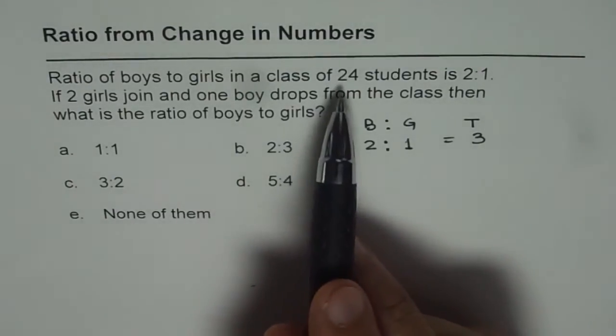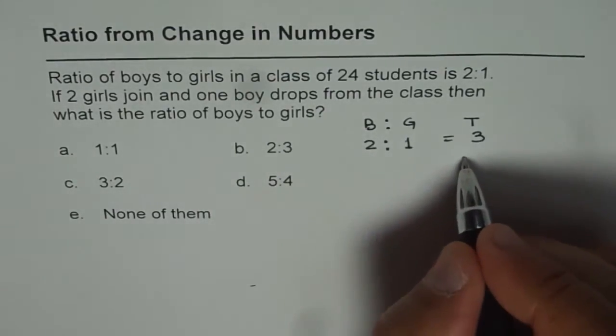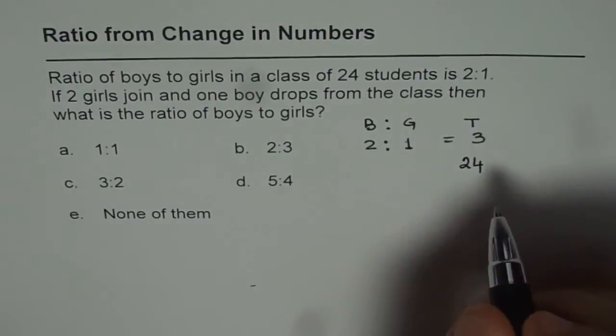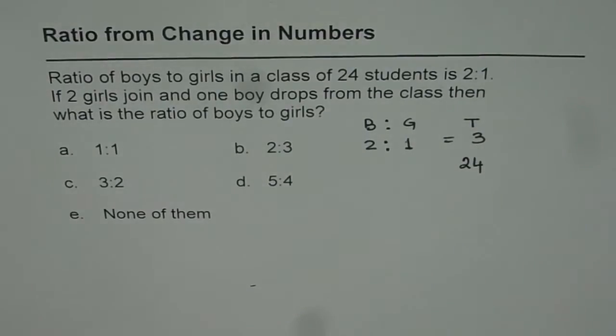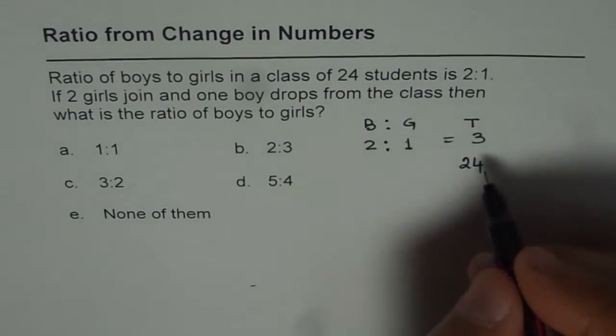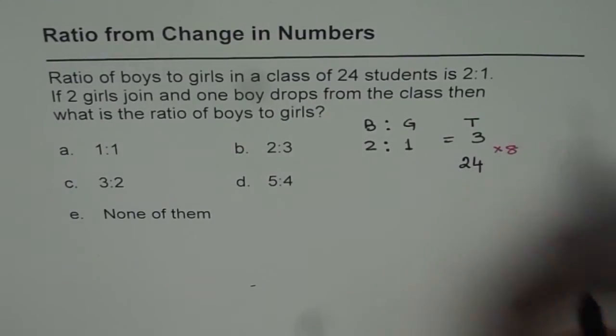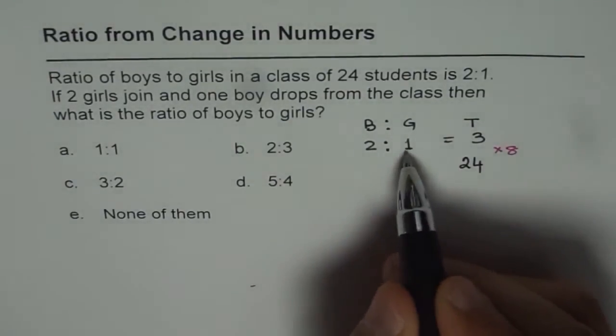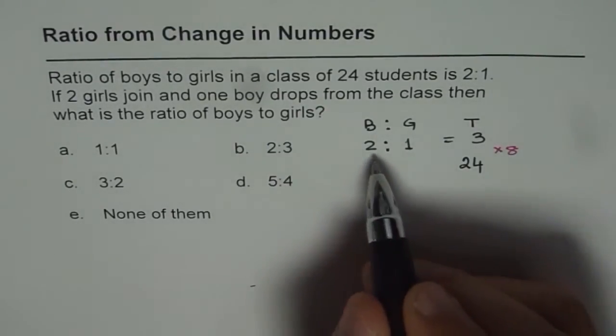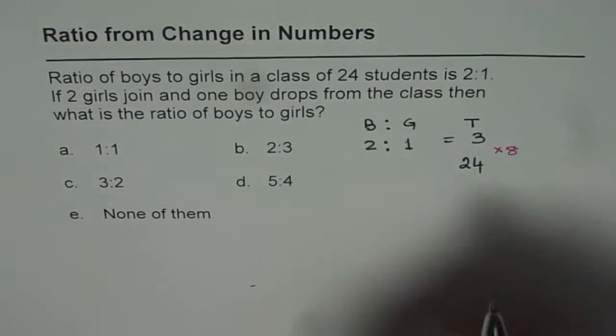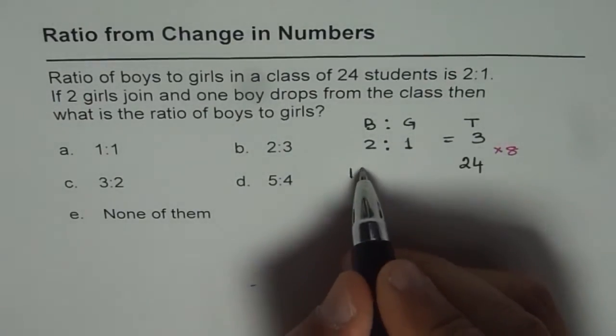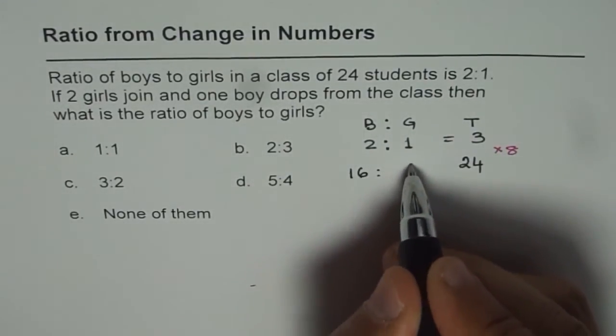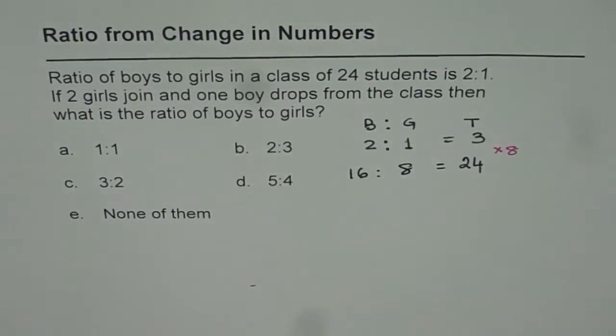Now in this class we have 24 students, right? So we will write 24 here. Now how is 24 related with 3? 24 is times 8. So it is times 8. So number of boys and girls, we will multiply both by 8 to know exactly how many boys are there and how many girls are there. 8 times 2 is 16 and 8 times 1 is 8. So that gives us a total of 24.